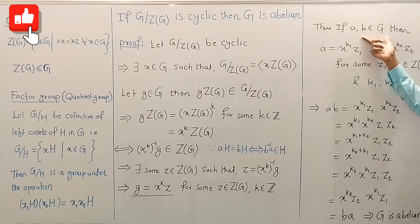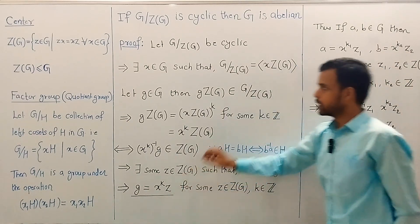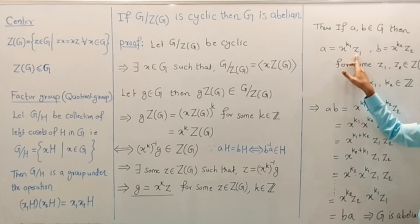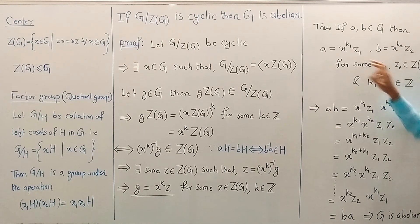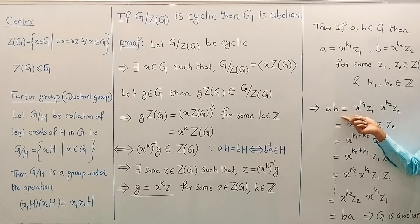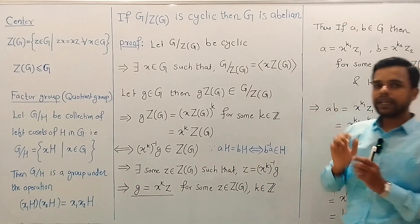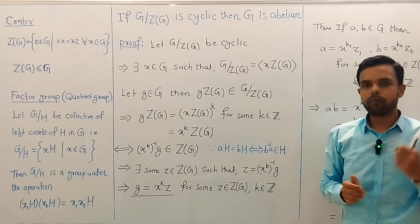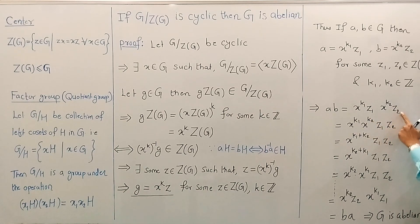So let a and b be any two elements of group G. Then a can be written in this form and b can also be written in this form. Say a equals x^{k1} times z1 and b equals x^{k2} times z2, for some z1, z2 in Z(G) and k1, k2 integers. Consider the product ab. Clearly ab equals x^{k1} times z1 times x^{k2} times z2. Since z1 is an element of Z(G), by definition of the center it commutes with every element of G, so z1 commutes with x^{k2} as well. So this can be written as x^{k1} times x^{k2} times z1 times z2.